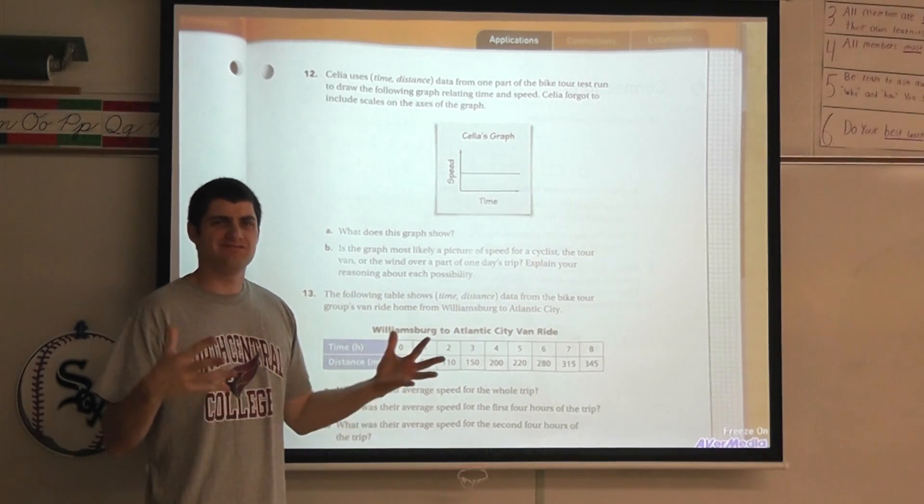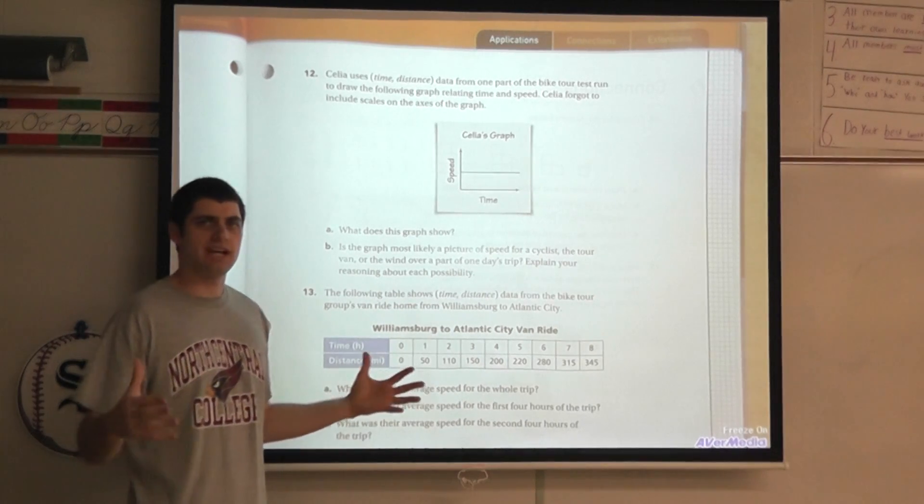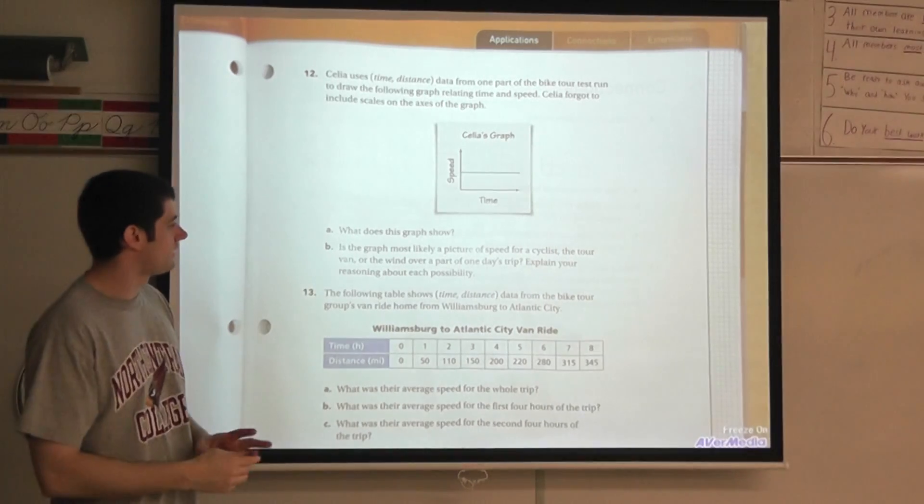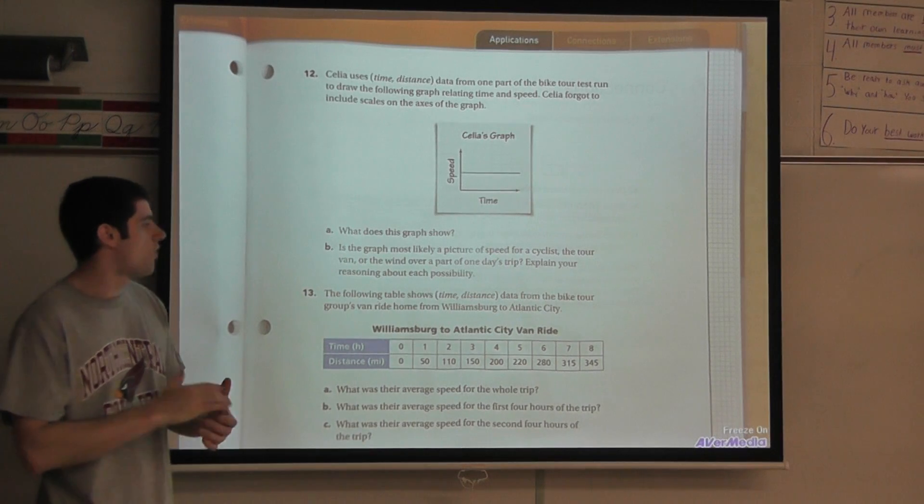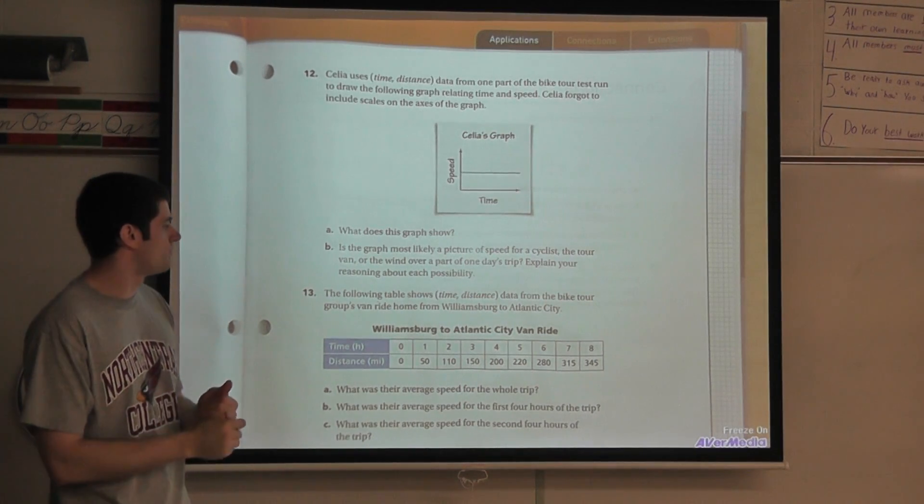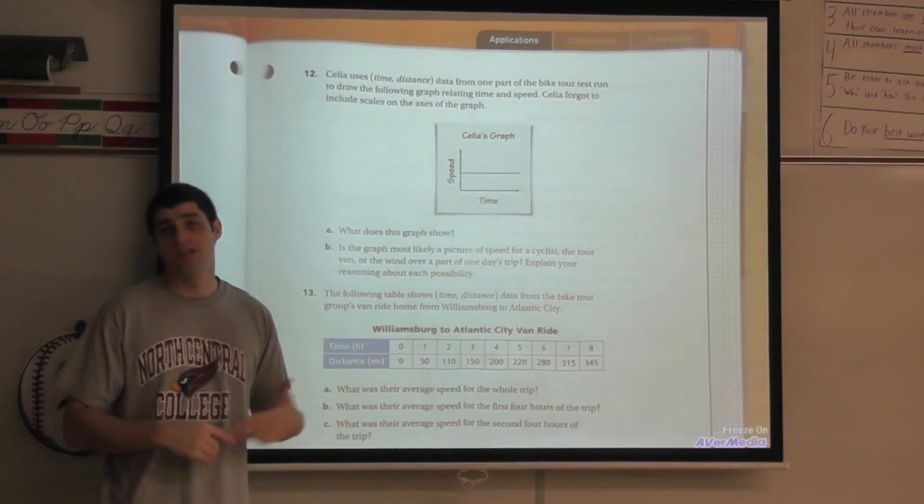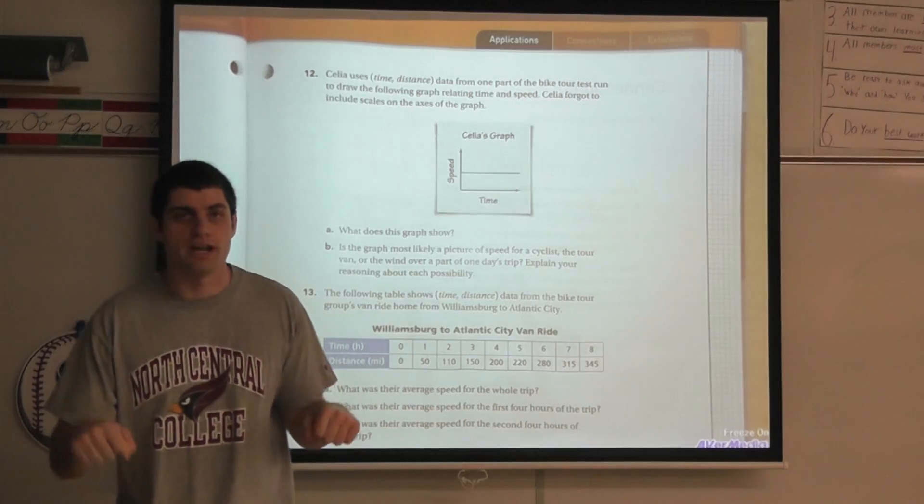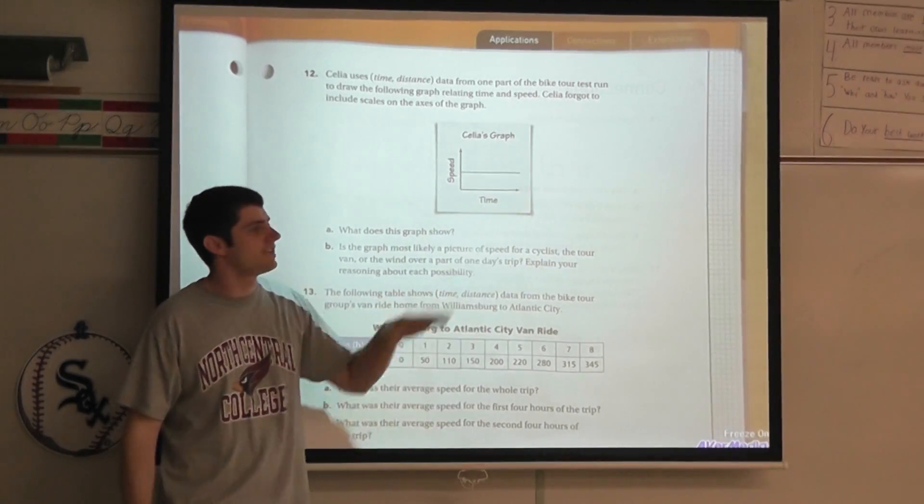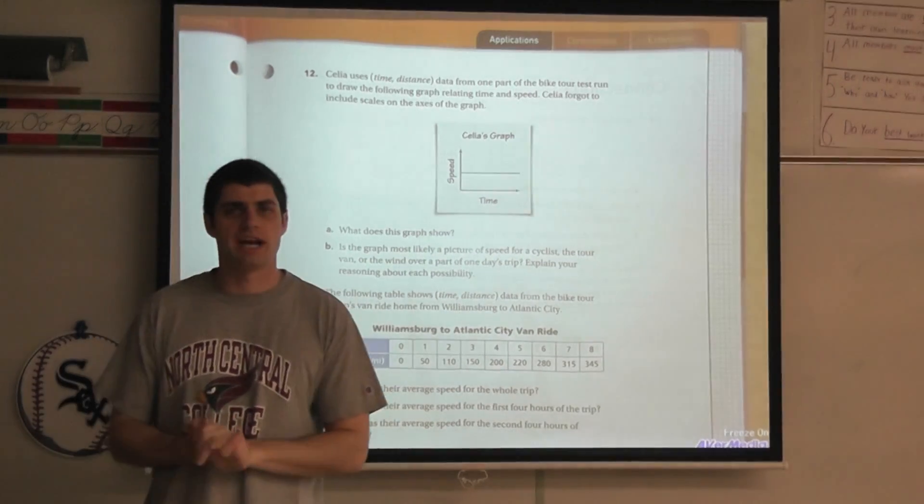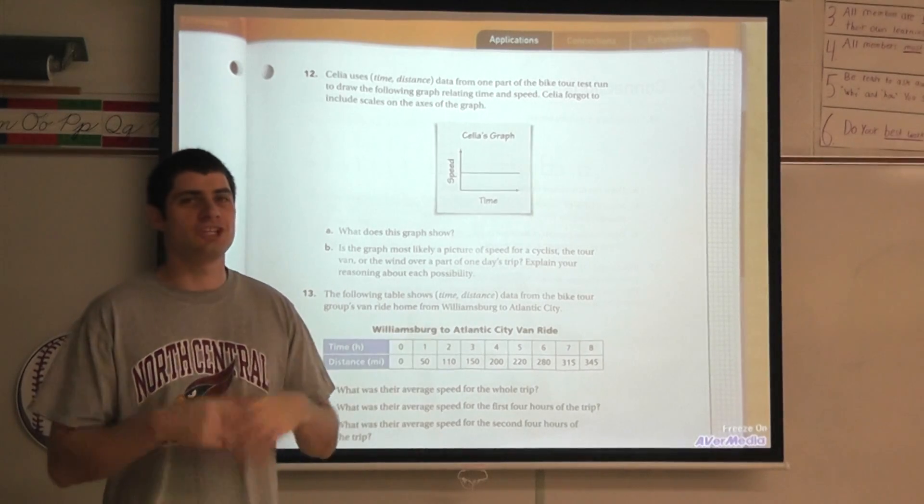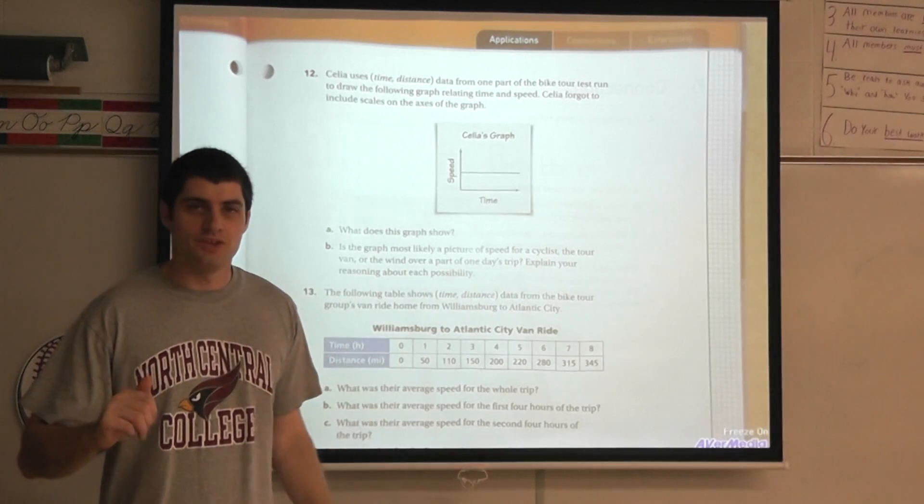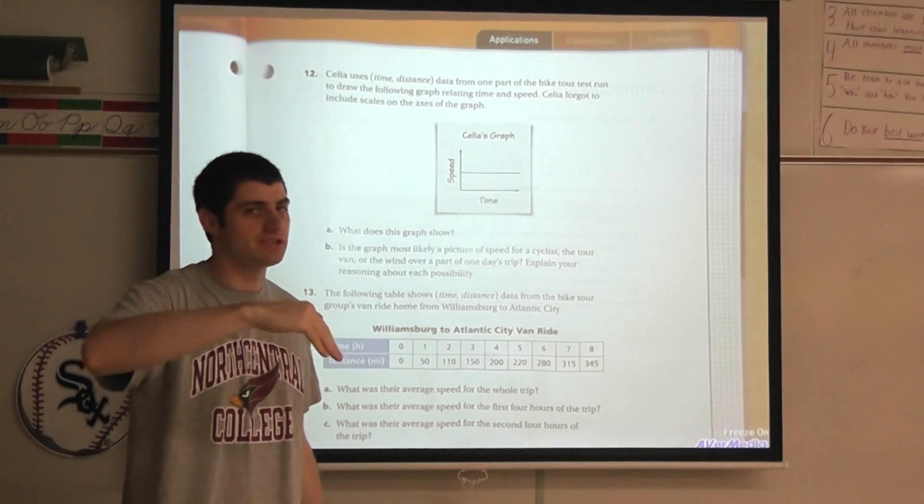Interesting. What might happen if the speed does not change over time? Well let's take a look at question b. Is the graph most likely a picture of speed for a cyclist, the tour van, or wind over a part of one day's trip and explain your reasoning about each possibility. Let's tackle each one. Let's think of a cyclist. Bike riders out there, you like to ride your bike, do you think your speed is going to stay the same all the way throughout? It's always going to be constant? Of course not, you guys have already done the first three investigations, we know this.